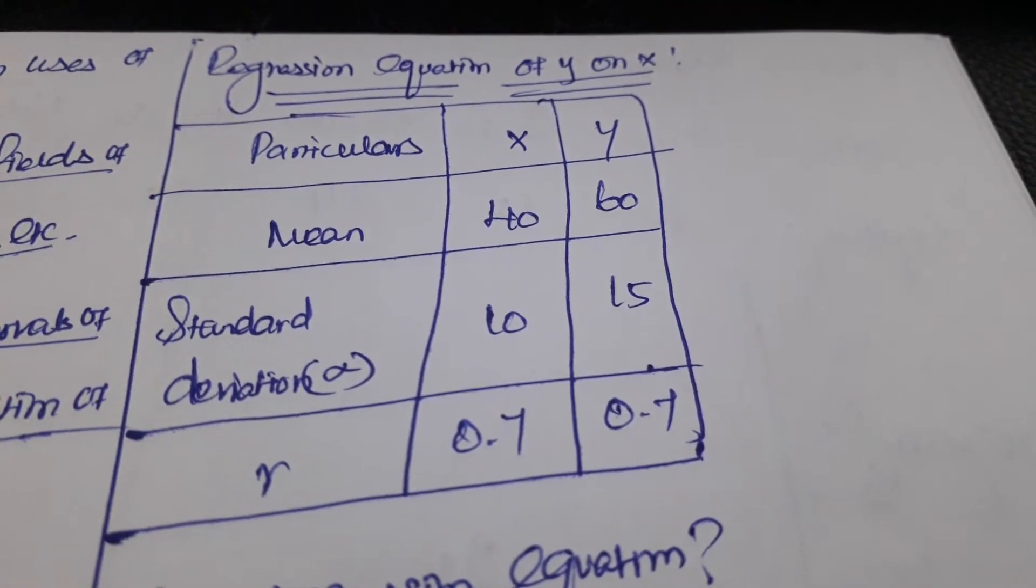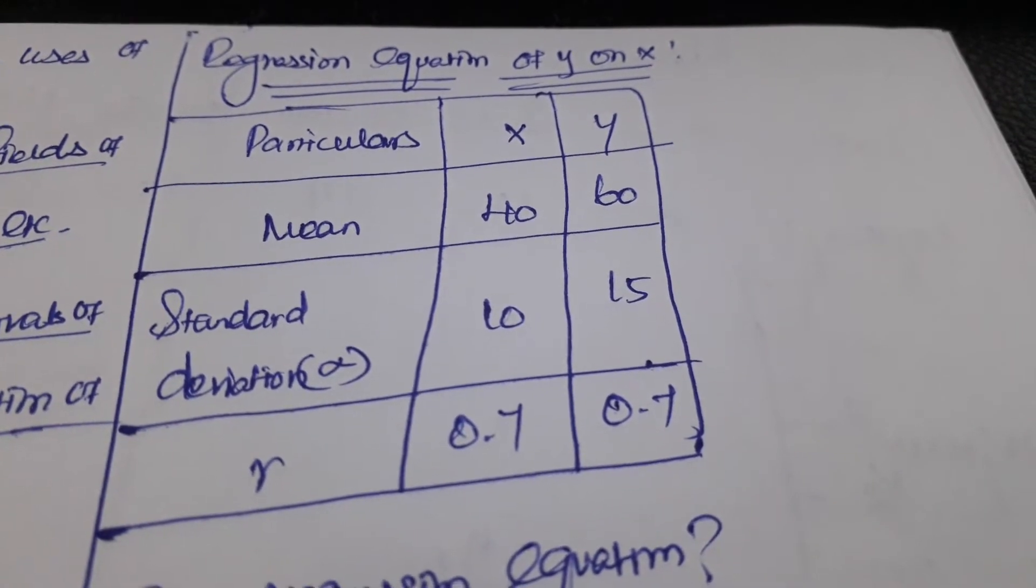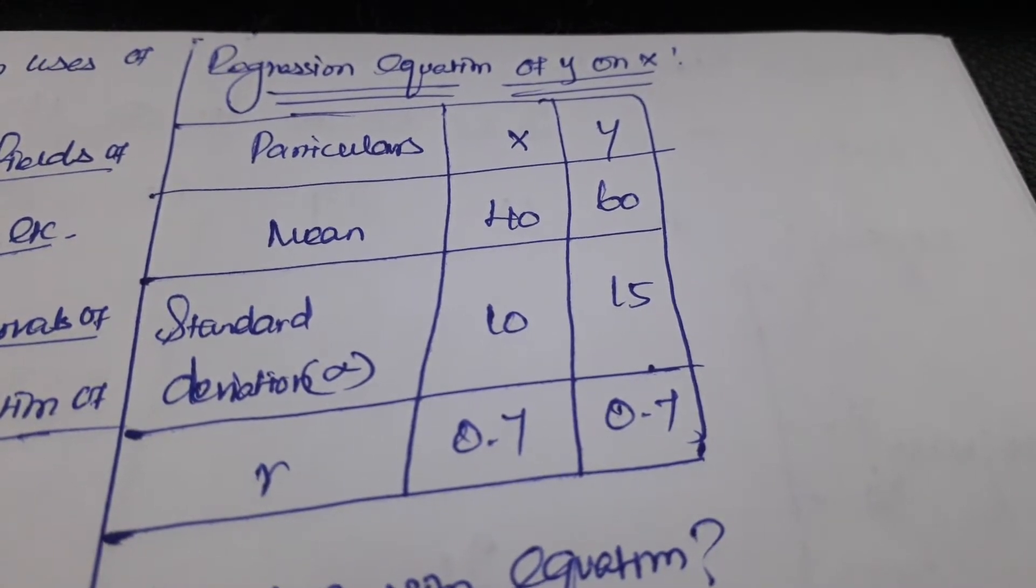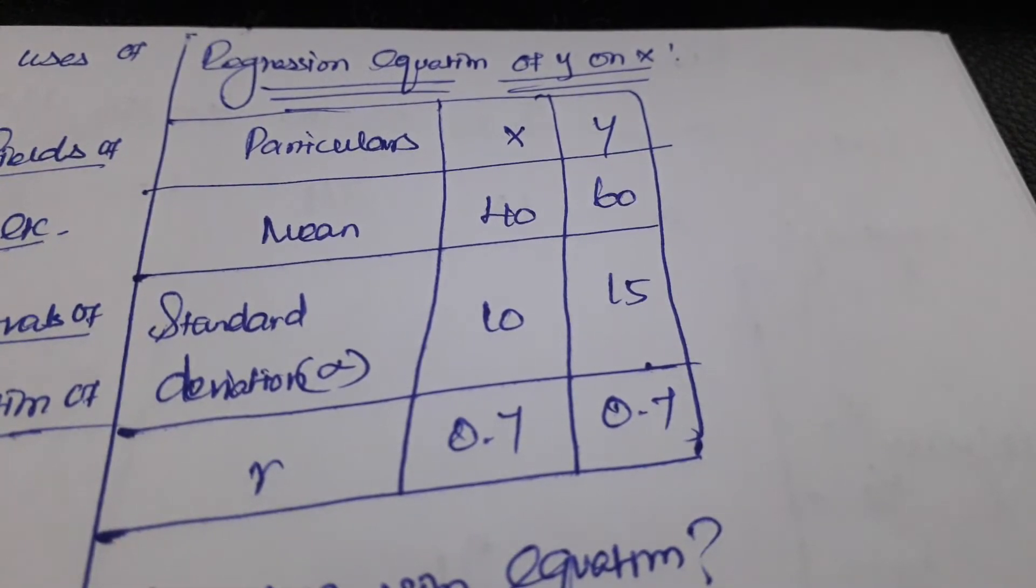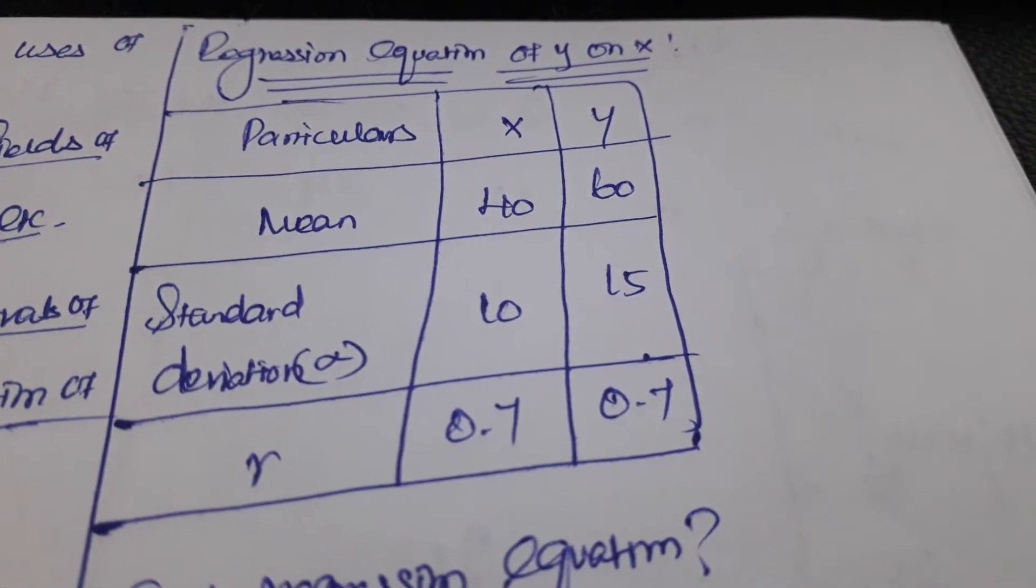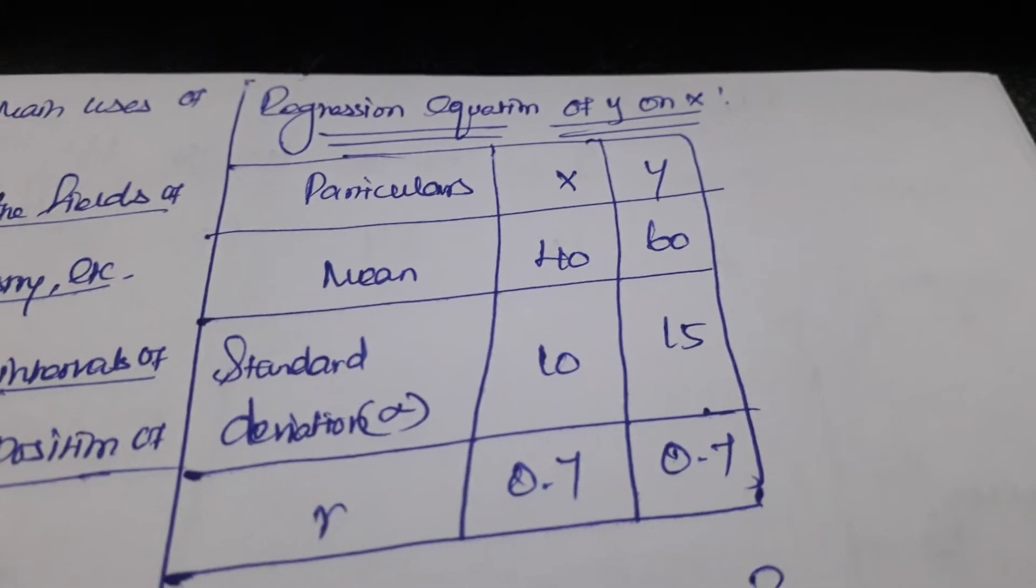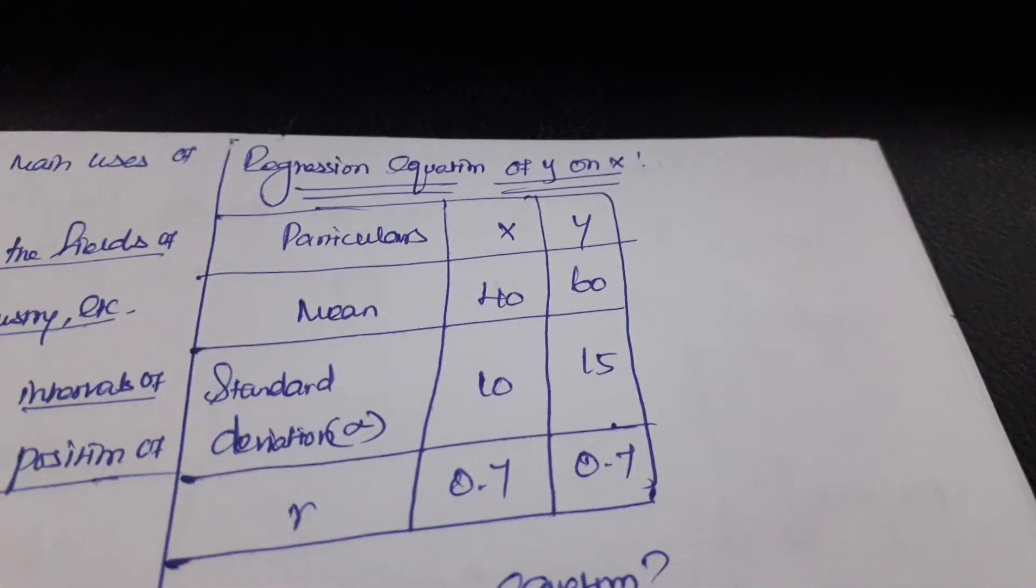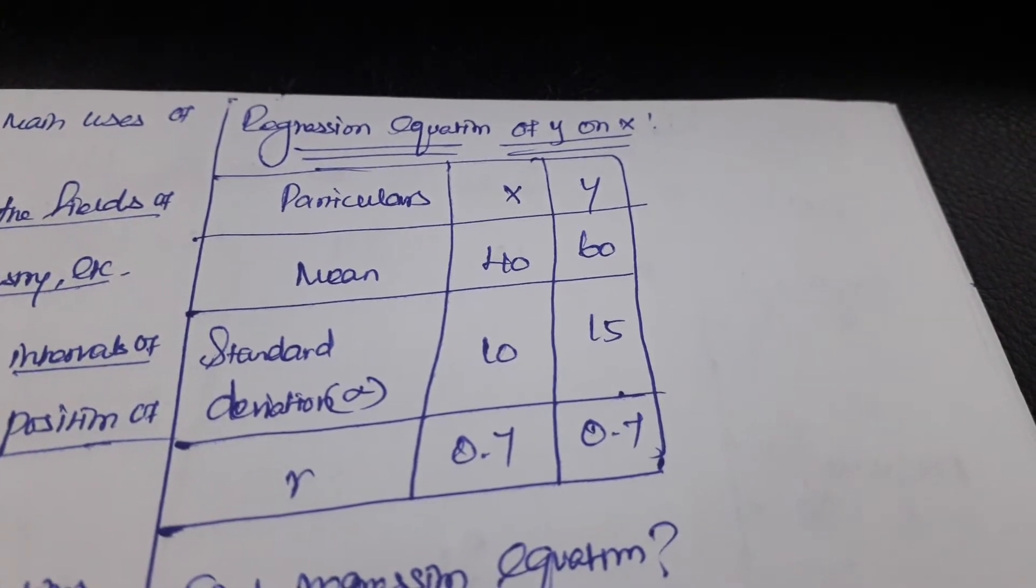A regression equation is a statistical model that determines the relationship between the predictor variable and outcome variable. We need to find out this relationship through the regression equation. We have some data here through which we have to find out the regression equation.